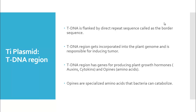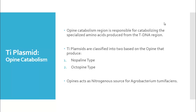The T-DNA region has genes for producing plant growth hormones like auxins, cytokinins, and opines. Opines are specialized amino acids that only the Agrobacterium can catabolize — that is the specialty of these amino acids.